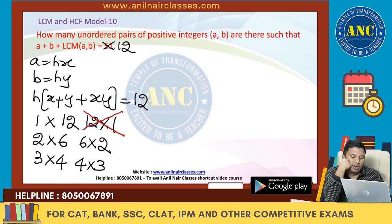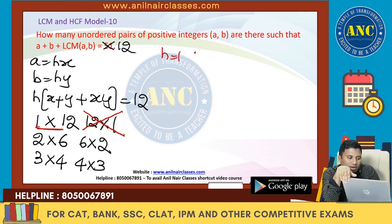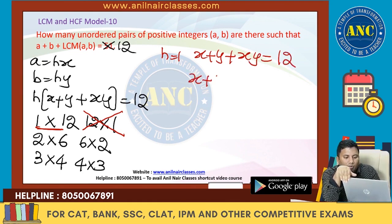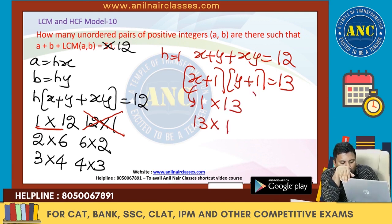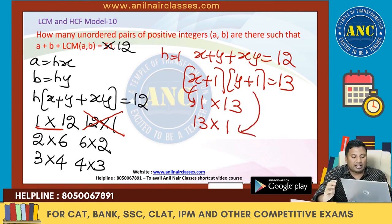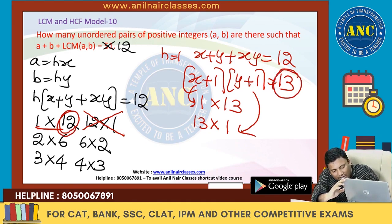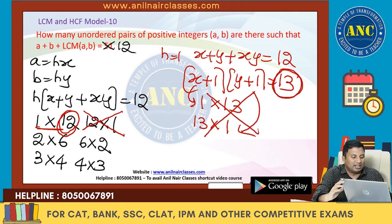This case is not possible because X will be 0, Y will be 0 if I take this case. If H is 1: X plus Y plus XY equals 12, adding 1 on both sides gives (X plus 1) into (Y plus 1) is 13. Since 13 is 1 into 13 or 13 into 1 — first case X will be 0, second case Y will be 0. So both are cancelled. If the result is a prime number, both cases are cancelled. Similarly for 6 into 2: adding 1 gives 7 — both cases cancelled. For 4 into 3: adding 1 gives 5 — both cases cancelled.